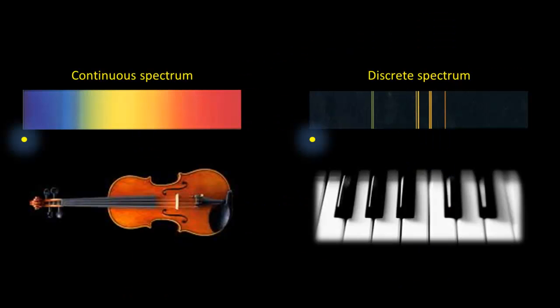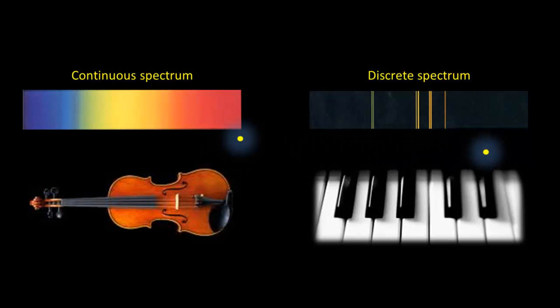It's like the difference between the notes you can play using a violin versus a piano. So why do gas atoms produce only certain frequencies of light, like a piano can only play certain frequencies of sound, and nothing in between?